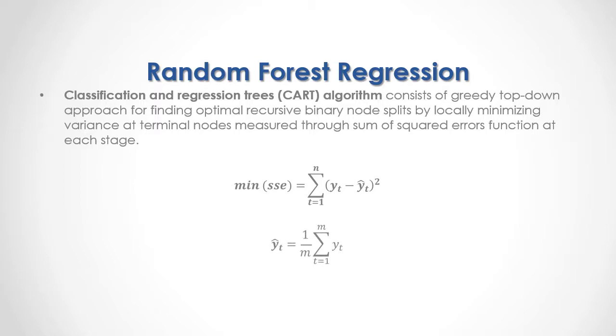Terminal node output target feature mean, in turn, is equal to 1 divided by m — where m is the number of observations in the terminal node — multiplied by the sum from the first to the last of the output target feature data.